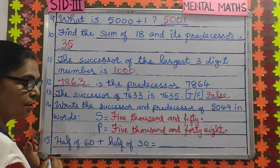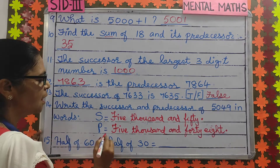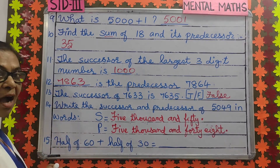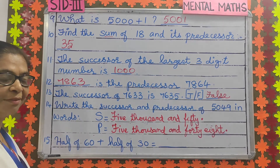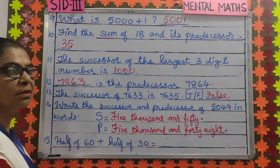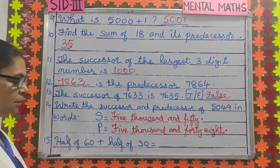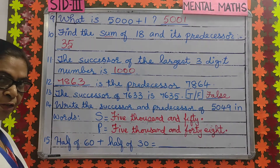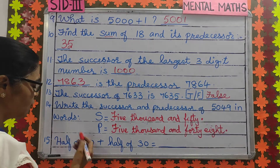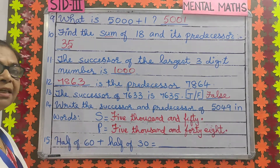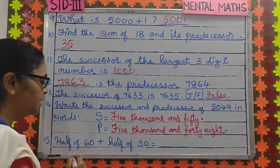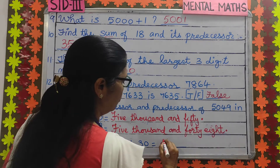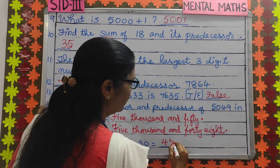Number 15: half of 60 plus half of 30. Half of 60 is 30. Half of 30 is 15. So 30 plus 15 is 45.